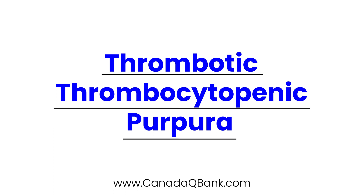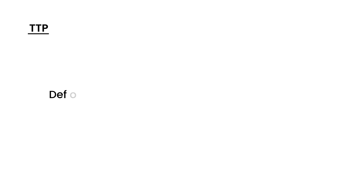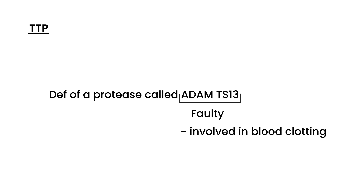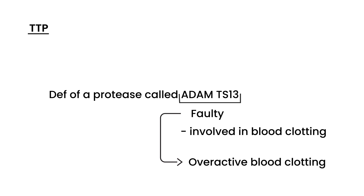Thrombotic thrombocytopenic purpura, or TTP, is the topic for this video. TTP results from the deficiency of a protease enzyme known as ADAMTS13, and it's either inherited or acquired. This enzyme is normally involved in blood clotting, and when it's faulty, what happens is that you have an overactive amount of blood clotting. So that's the essential etiology.